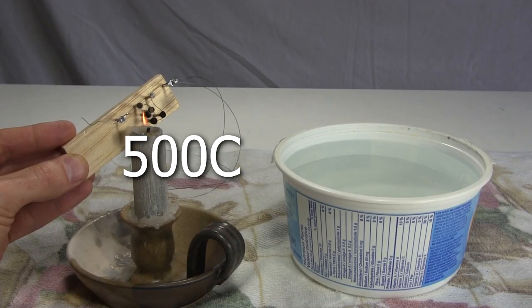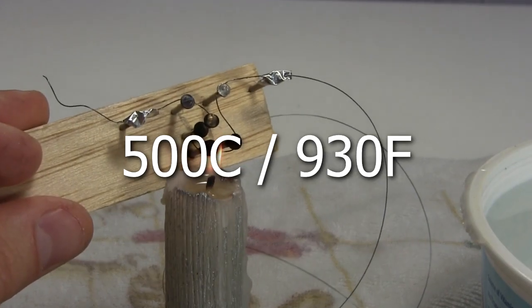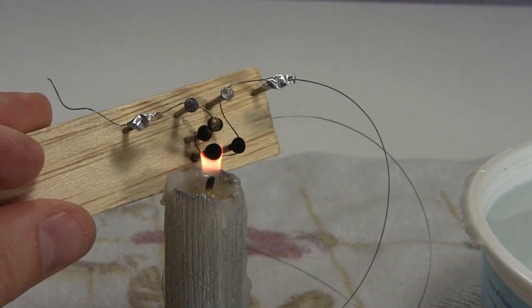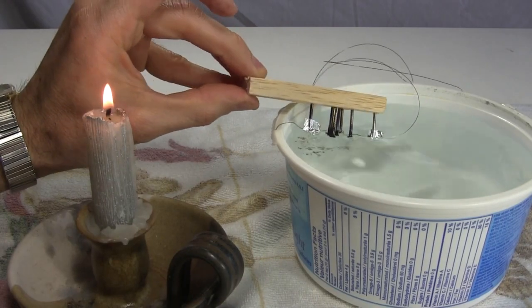I heat it above 500 celsius, or 930 fahrenheit, by putting it in a candle flame until the wire is glowed red hot. Then I cool it in cool water.